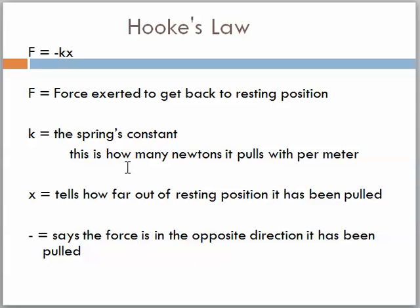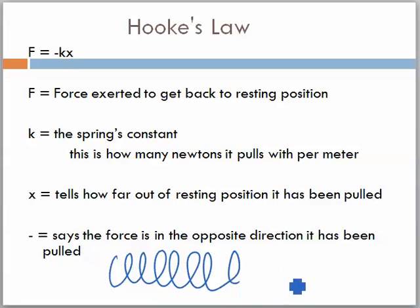The negative in this case says the force is in the opposite direction it has been pulled. So what they're saying here is we've got the spring, and it's been pulled. Someone pulled it to the right. Well, the force from Hooke's Law is telling us that that force is in the opposite direction that it was pulled, because the spring wants to go back to where it was. So the negative tells us that the force is always in the opposite direction that it's been pulled.